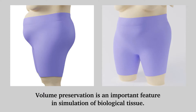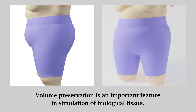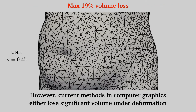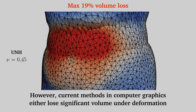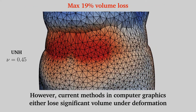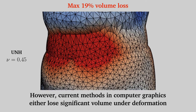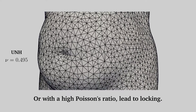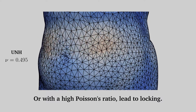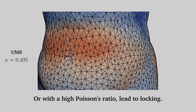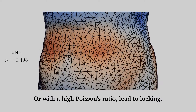Volume preservation is an important feature in simulation of biological tissue. However, current methods in computer graphics either lose significant volume under deformation, or with a high Poisson's ratio, they lead to locking.